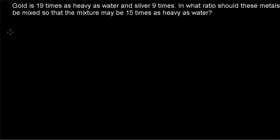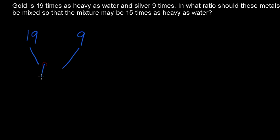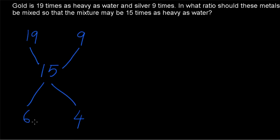Next example: gold is 19 times as heavy as water and silver is 9 times as heavy as water. In what ratio should these metals be mixed so that the mixture is 15 times as heavy as water? In all three cases the weight relative to water is given. Applying the rule of allegation with 19, 9, and 15: the difference between 15 and 9 is 6, and the difference between 19 and 15 is 4. So the required proportion is 6 to 4, which simplifies to 3 to 2.